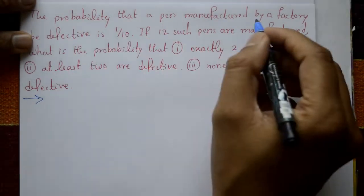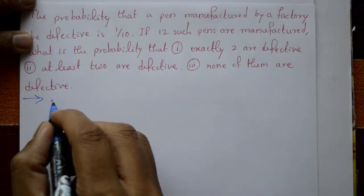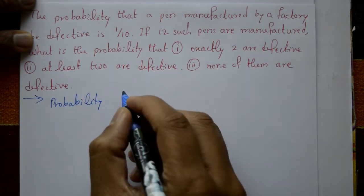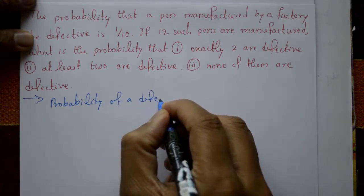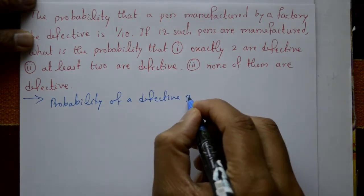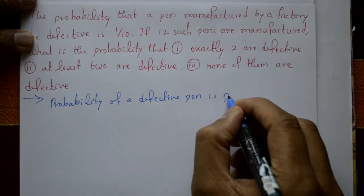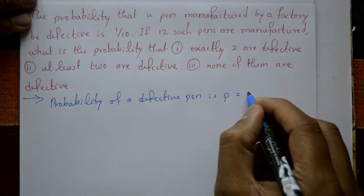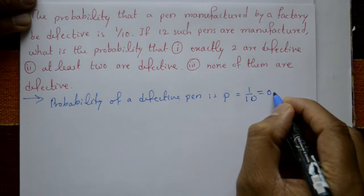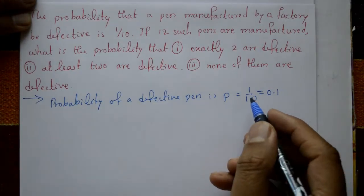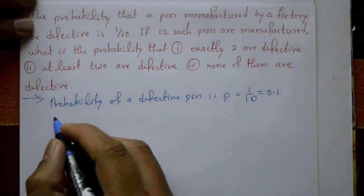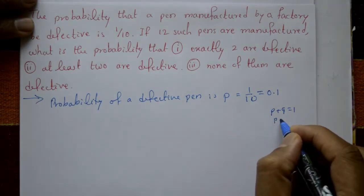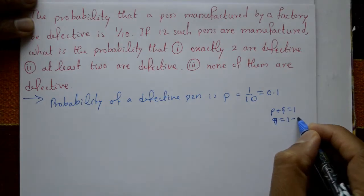The probability of a defective pen is equal to p. So p equals 1 by 10, which is 0.1. We also find the probability of a non-defective pen, since p plus q equals 1, so q equals 1 minus p.